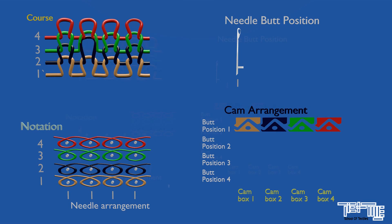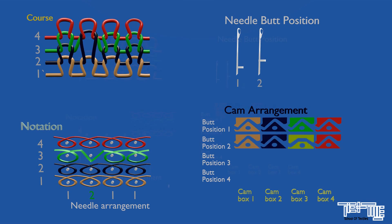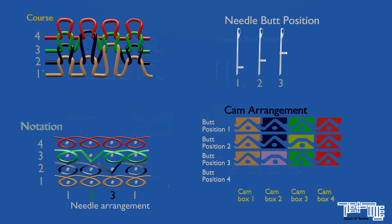But if there are two types of whale lines, two sets of needles with different butt position is required, which will need two track cam system. For three it will be three, and for four types of whale lines, four butt needle with four track cam system is used.